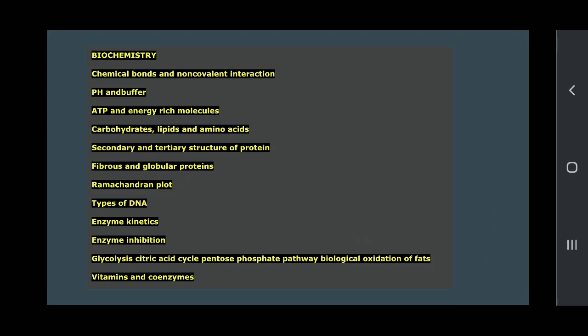Out of which pH and buffer, ATP, as well as secondary and tertiary structure of protein, types of DNA and Ramachandran plot, enzyme inhibition, these are very important. You cannot skip it because each and every attempt will have a question from this particular topic.